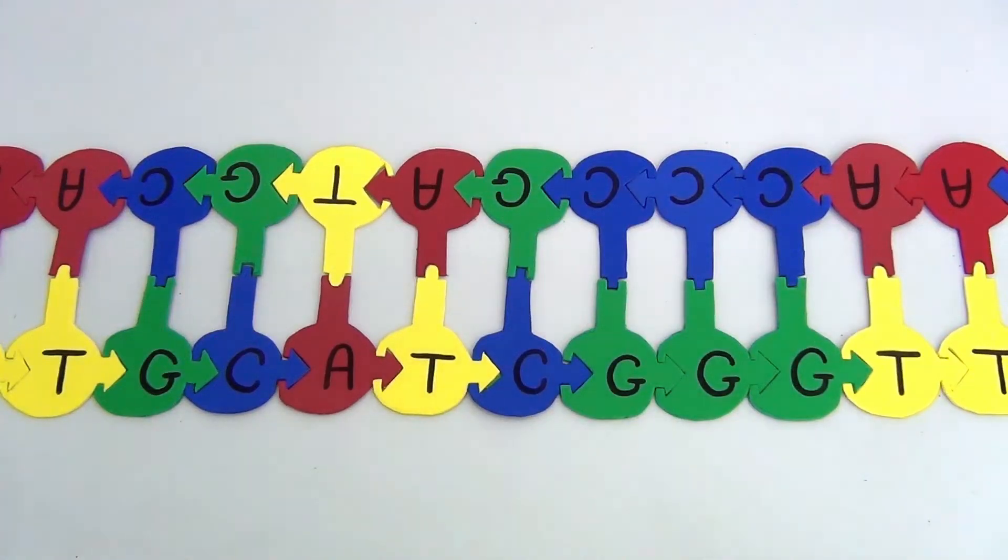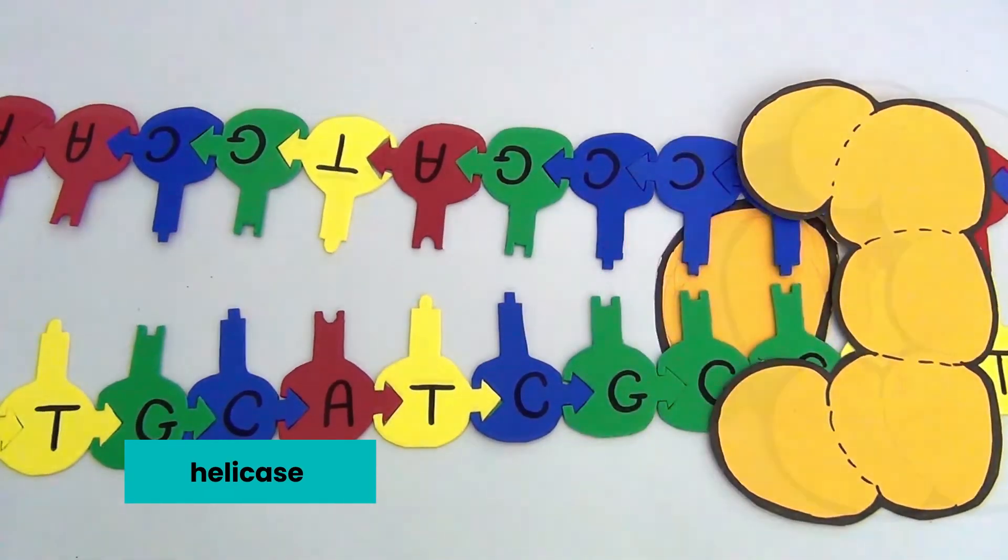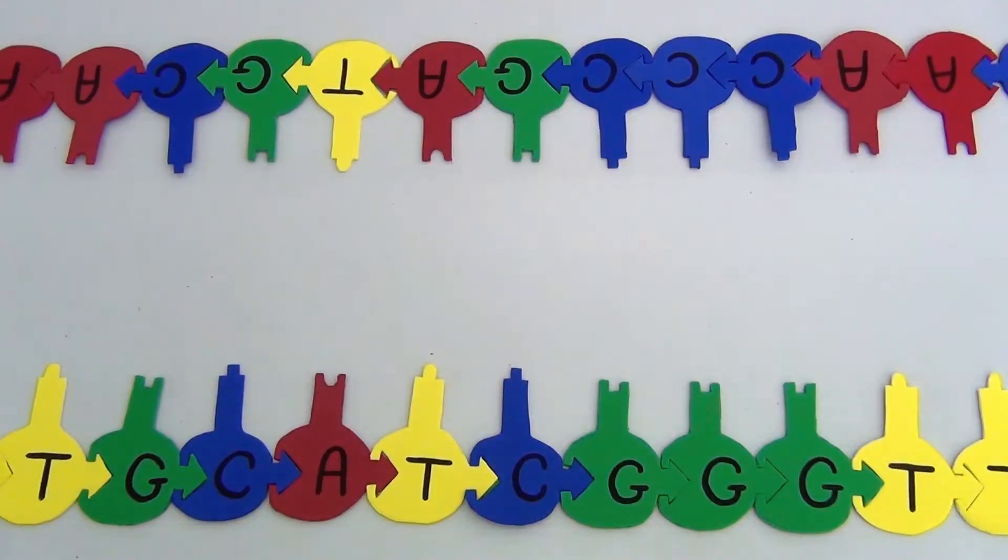DNA in your cells is usually double-stranded. In order to access the DNA and start replication, DNA needs to be made single-stranded. A protein called helicase binds to double-stranded DNA and breaks the hydrogen bonds between the nitrogenous bases, separating the DNA into single strands.